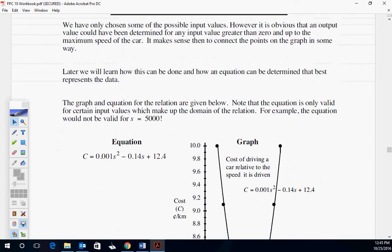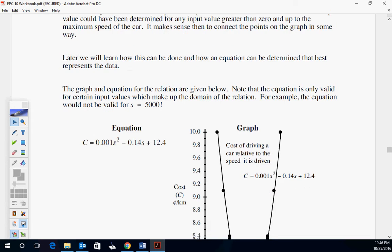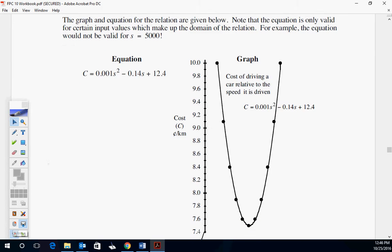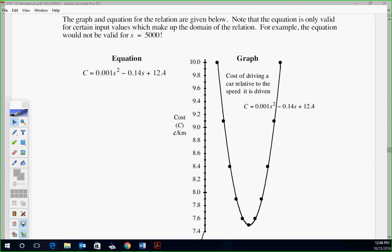We've only chosen some of the possible input values. However, it's obvious that an output value could have been determined at any input value greater than zero up to maximum speed of the car. So the car has a maximum speed. It can't go a million kilometers an hour. So there will be a top out in terms of the fastest it can go. This is the actual equation for the car. You don't have to find that. The graph of the equation relation is given below. Note that the equation is only valid for certain input values which make up the domain relation. Your domain is as far as it can go from left to right. The slowest it can go is 20, the fastest it can go is 120. So that's your domain, it's between 20 and 120.